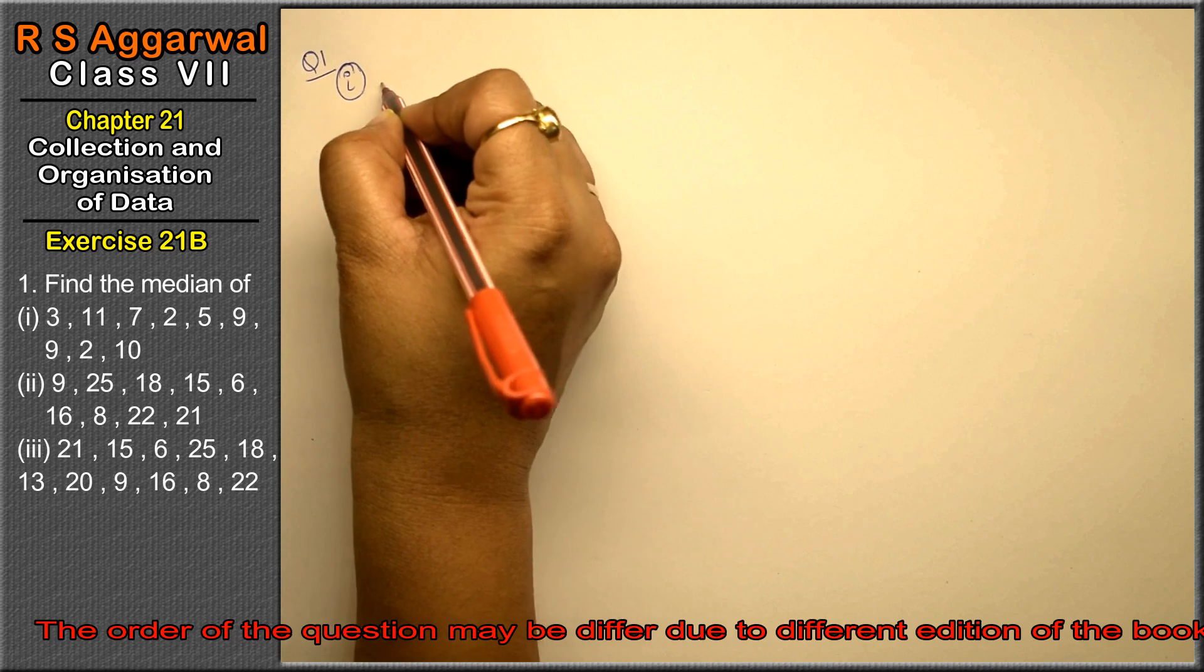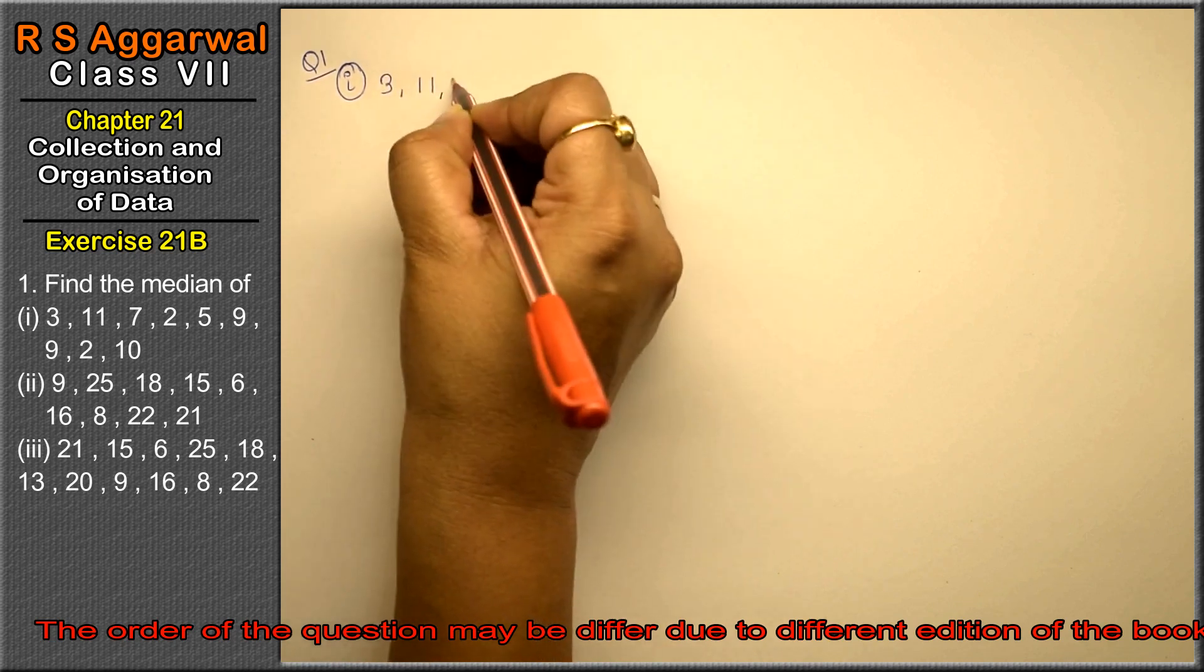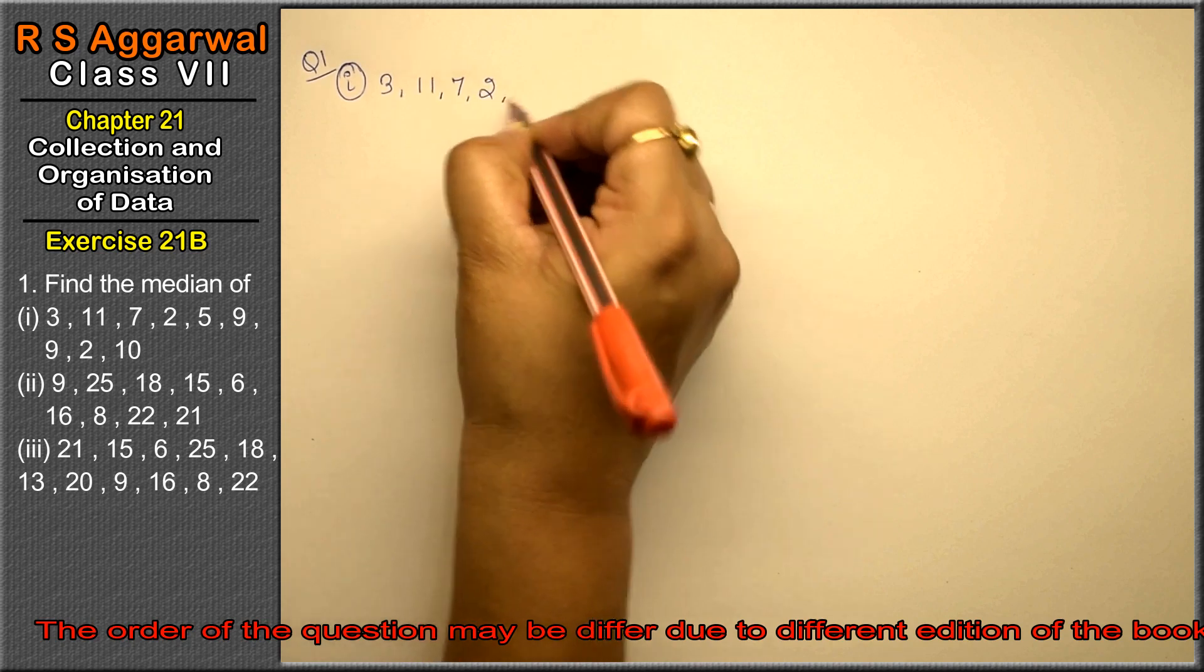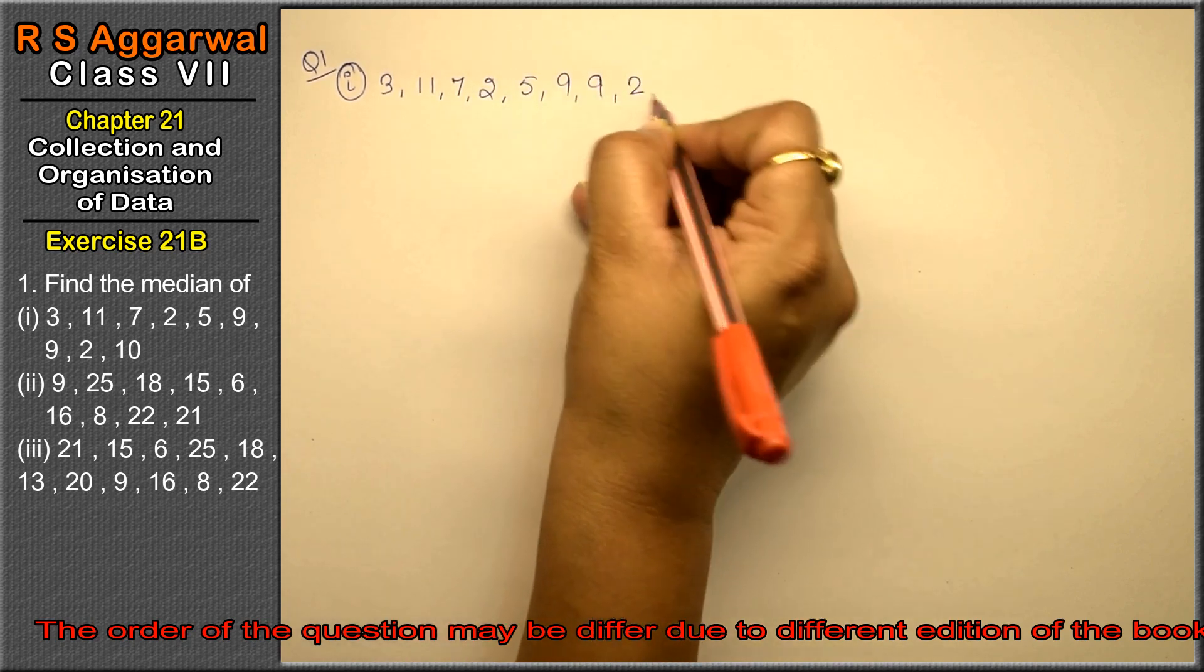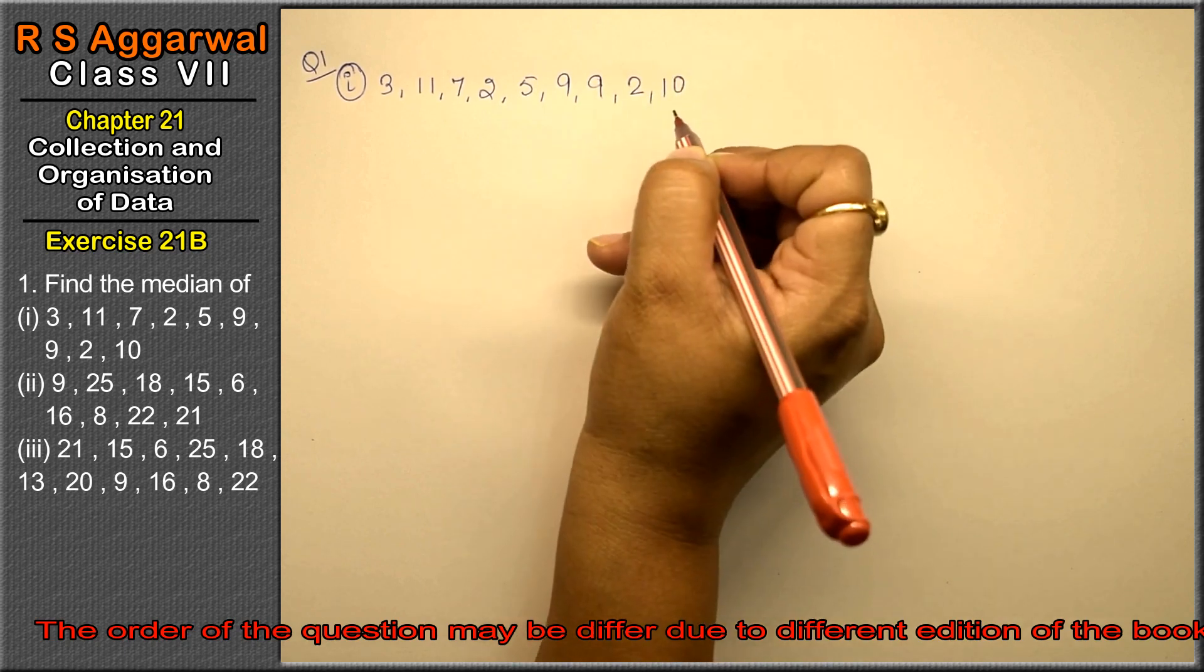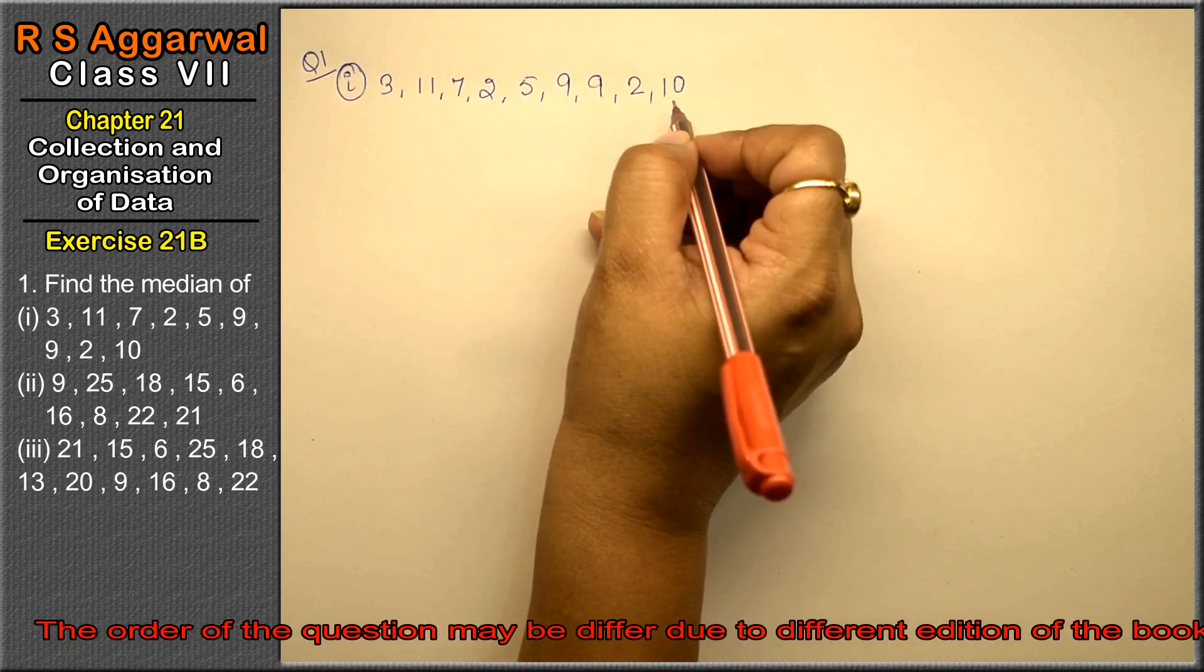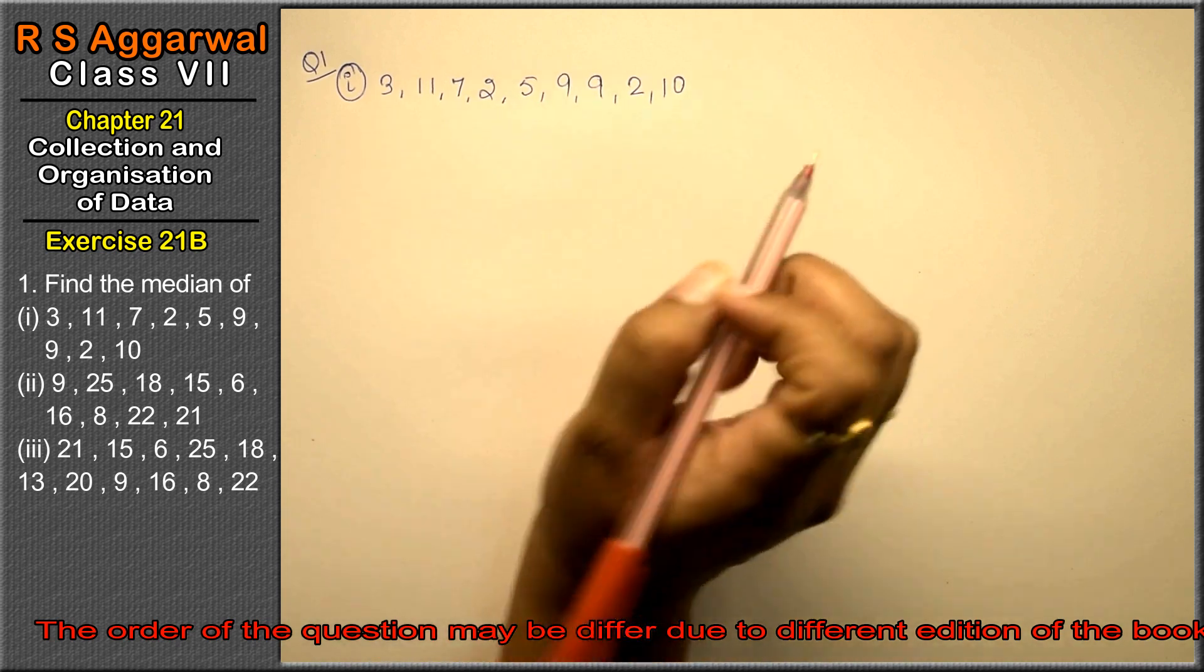When we have numbers 3, 11, 7, 2, 5, 9, 9, 2, and 10, this type of numbers is called discrete series. There is raw data in discrete series.